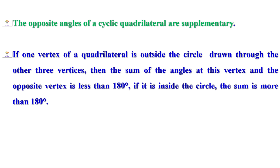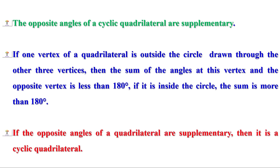If one vertex of a quadrilateral is outside the circle drawn through the other three vertices, then the sum of the angles at this vertex and the opposite vertex is less than 180 degrees. If it is inside the circle, the sum is more than 180 degrees. If the opposite angles of a quadrilateral are supplementary, then it is a cyclic quadrilateral.